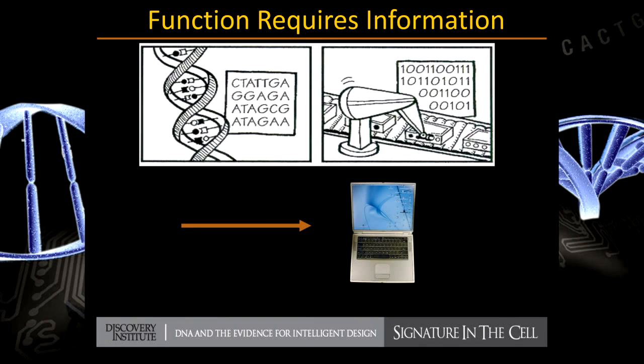I used to ask my students: if you want to give your computer a new functionality, a new function, what do you have to give it? And of course they knew — code. You have to give it information. And the same thing is true in life. If you want to produce life in the first place, if you want to develop a new form of life from a pre-existing form of life, you have to provide information.